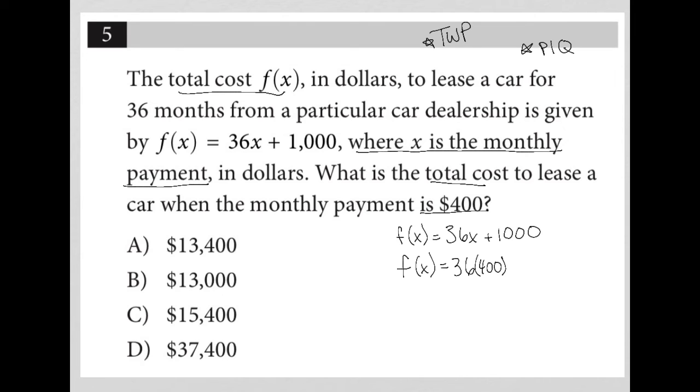And we were told where it goes technically. So then plus 1,000. I just plug that 400 in. Then I go to my calculator. What is 36 times 400?